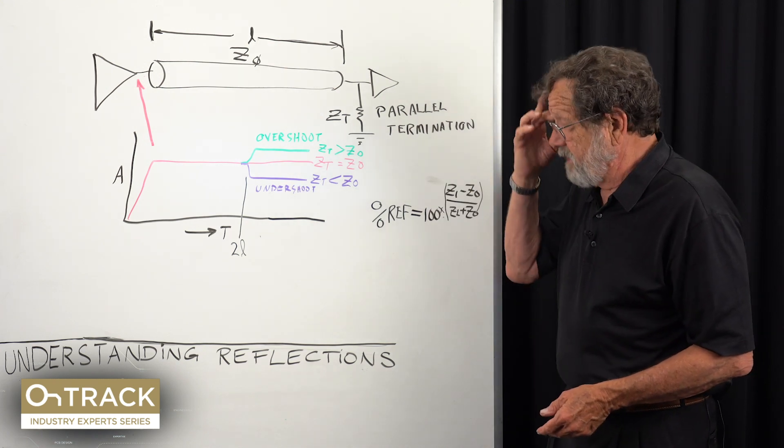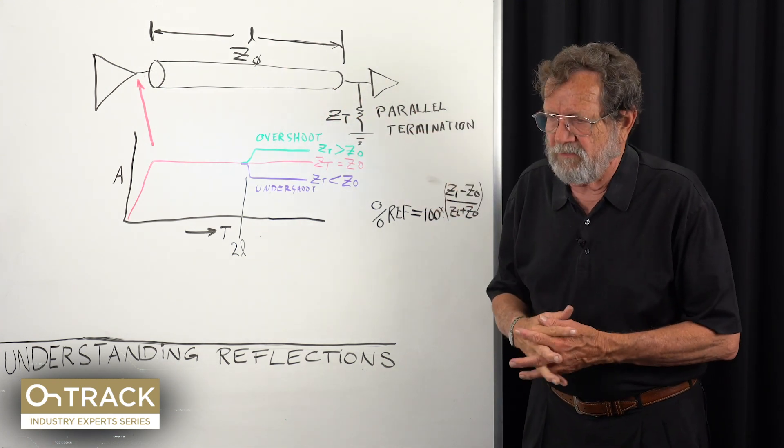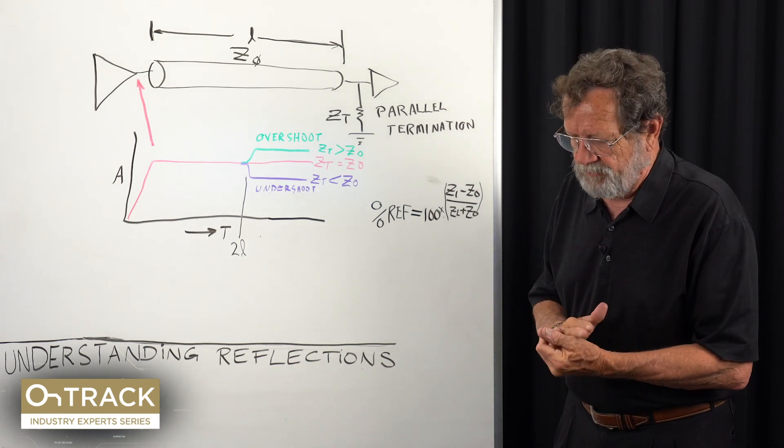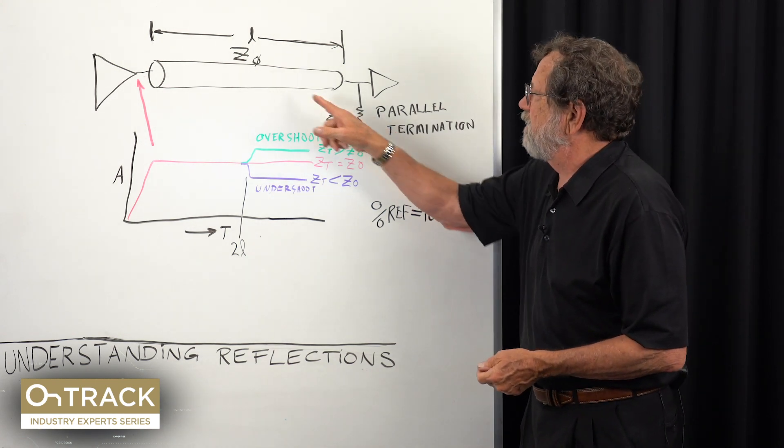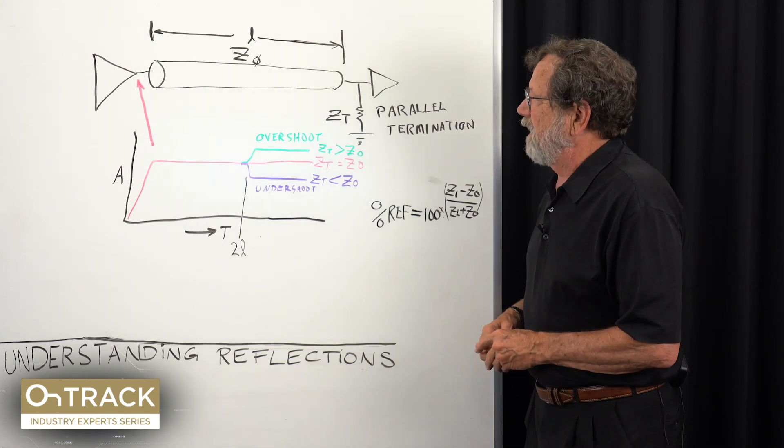What I've got here on the board is a classic parallel terminated transmission line. We know that if the world were perfect, the terminator value would exactly match the impedance of the transmission line.